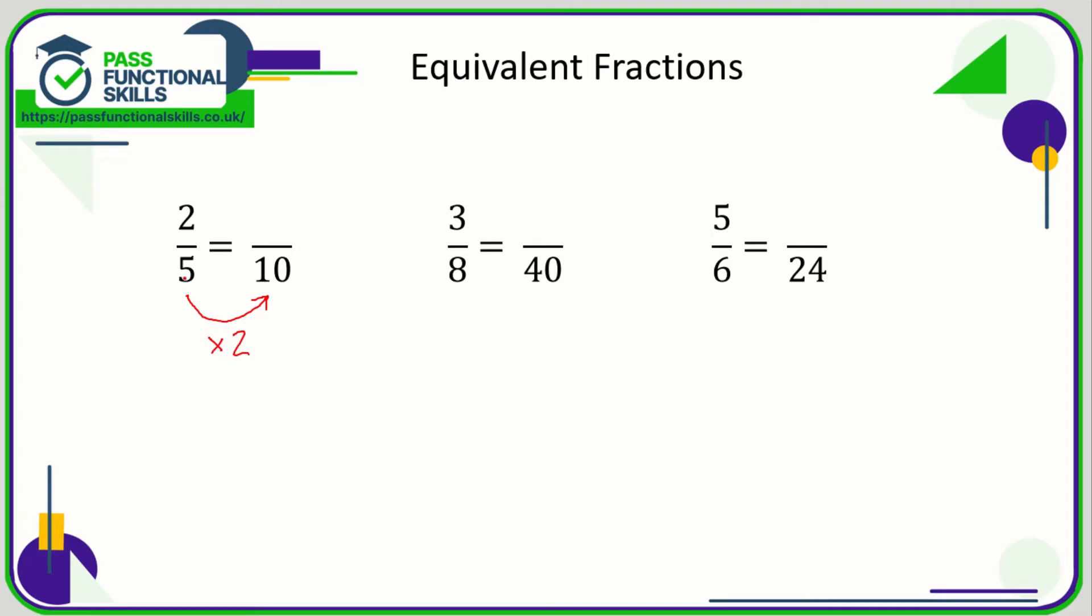You can't say 5 plus 5 is 10. Well, 5 plus 5 is 10, but we need to see this in terms of multiplying. So 5 times 2 is 10, and whatever we do to the bottom we need to do to the top as well. So if we double the top we get 4/10. 2/5 equals 4/10.